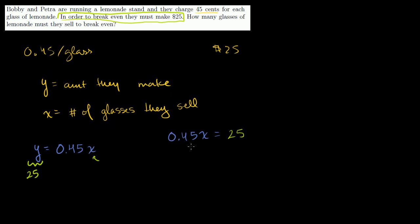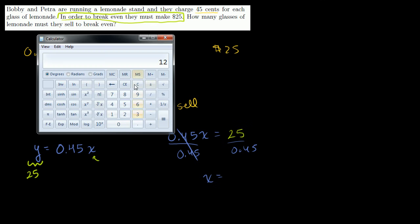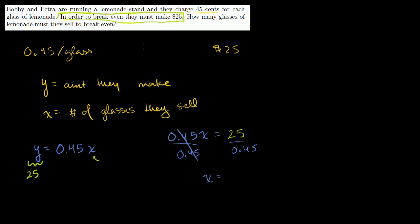We can divide both sides by 0.45. On the left-hand side, you're just left with an x. So you get x is equal to what is 25 divided by 0.45. So at 50, they would have to sell exactly 55.55 glasses, or 5.6 if I round. So 55.5 repeating glasses.